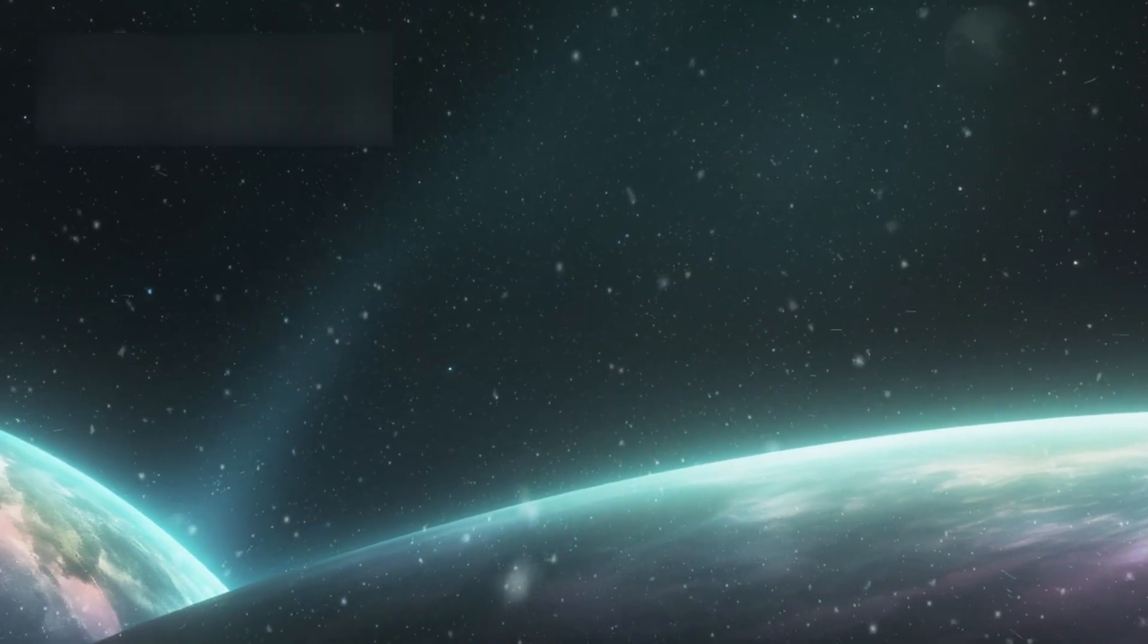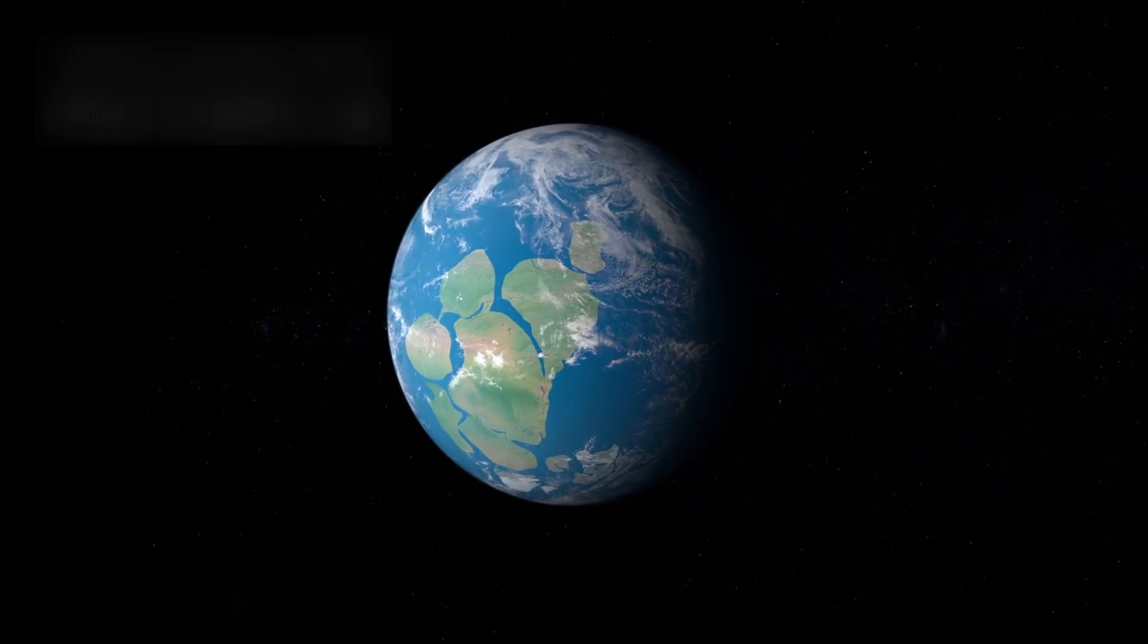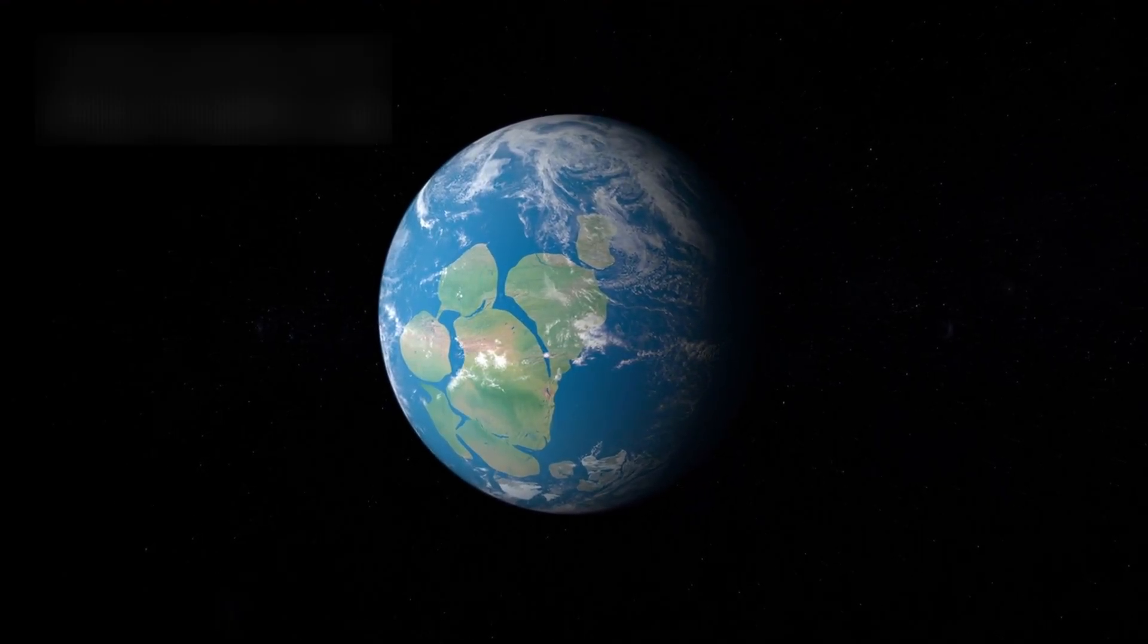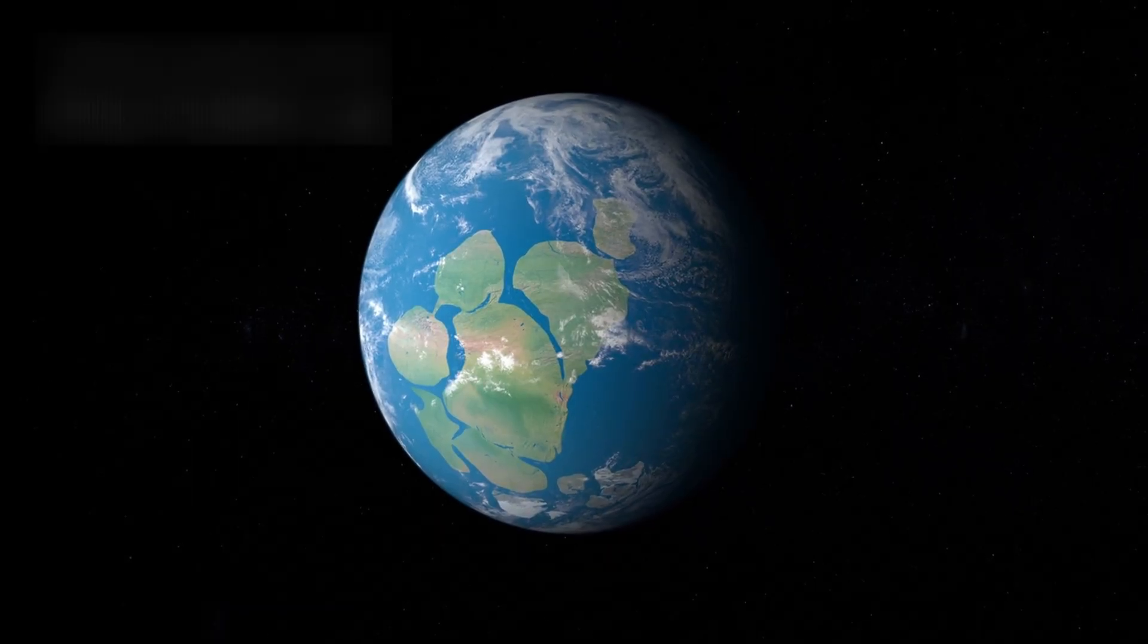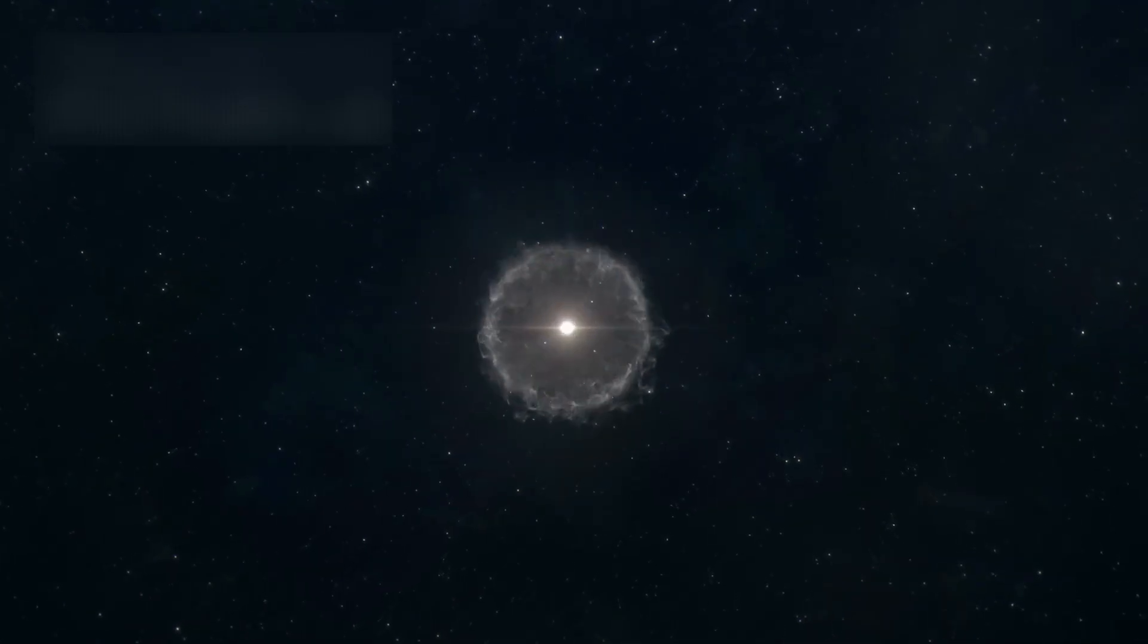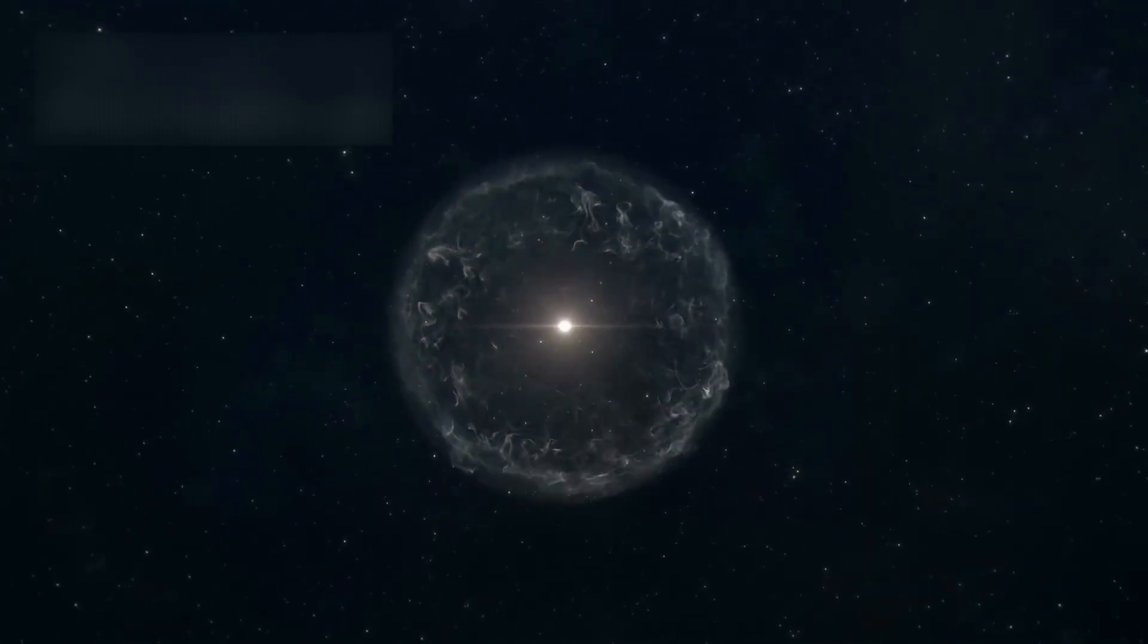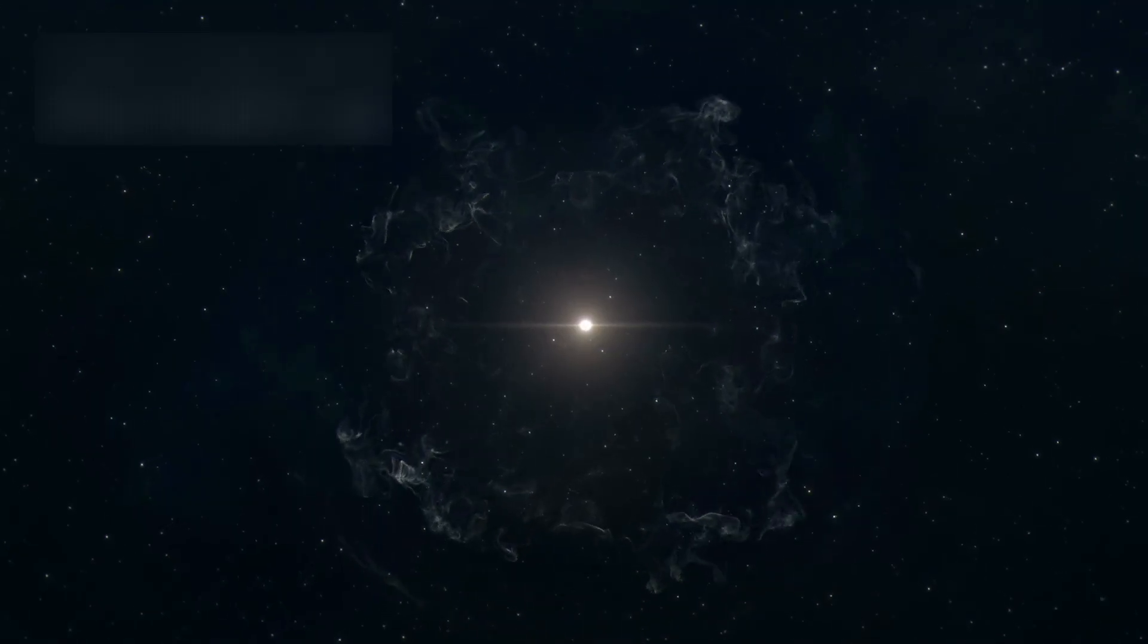That planet is K218b. Classified as a super-Earth, it is a world roughly 8.6 times more massive than Earth, orbiting a small, cool dwarf star in the constellation Leo. What makes it remarkable is not just its size or orbit, but the fact that it lies within the star's habitable zone, the region where temperatures could allow liquid water to exist.